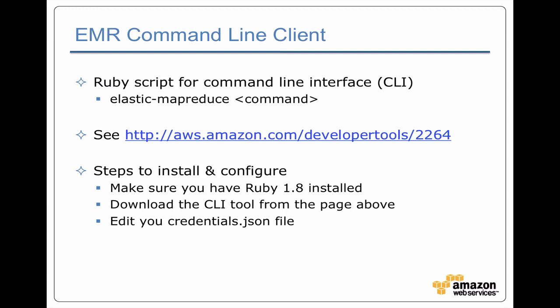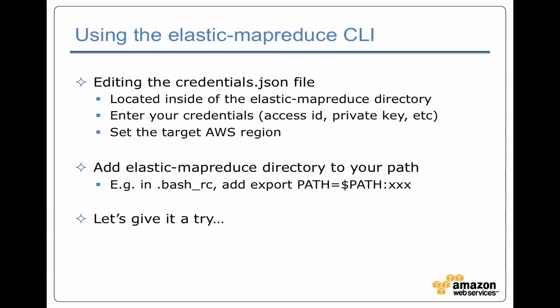The first tool we're going to talk about is the command line client for Elastic MapReduce. This is one that Amazon maintains and you can download it from the AWS website. It depends on you having Ruby 1.8 or later installed. Once you've downloaded it, there's a step where you want to edit the credentials.json file. Basically it's a file that lives inside the tools directory where you provide all the information needed to interact with Amazon — your access IDs and keys. Then typically you want to add that tool to your path so you can enter commands straight from the command line.